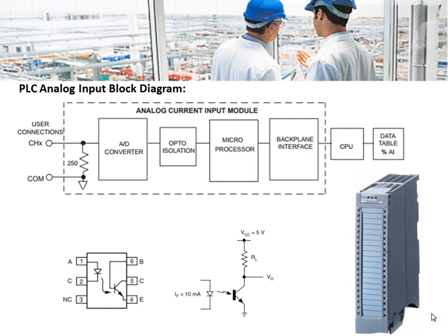The voltage is then fed to an ADC — analog to digital converter. The common types of ADCs used in PLCs are successive approximation type and Delta-Sigma type. After digital conversion, the signal is opto-isolated and fed to a microprocessor or microcontroller, and through a backplane interface it is fed to the CPU of the PLC.